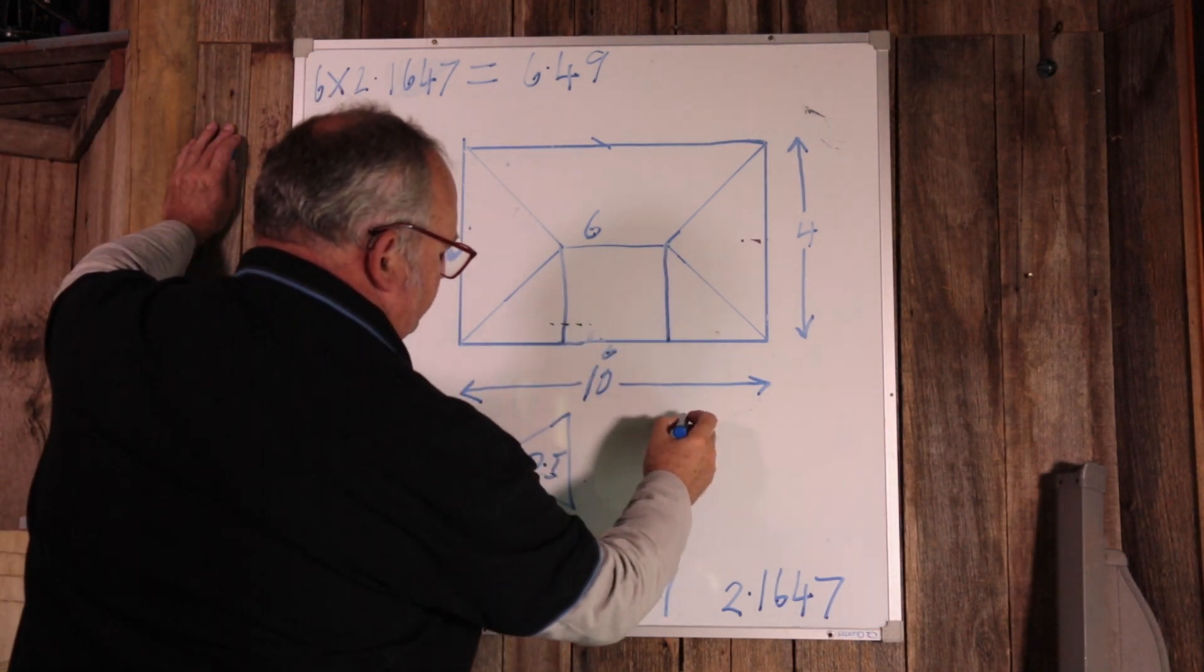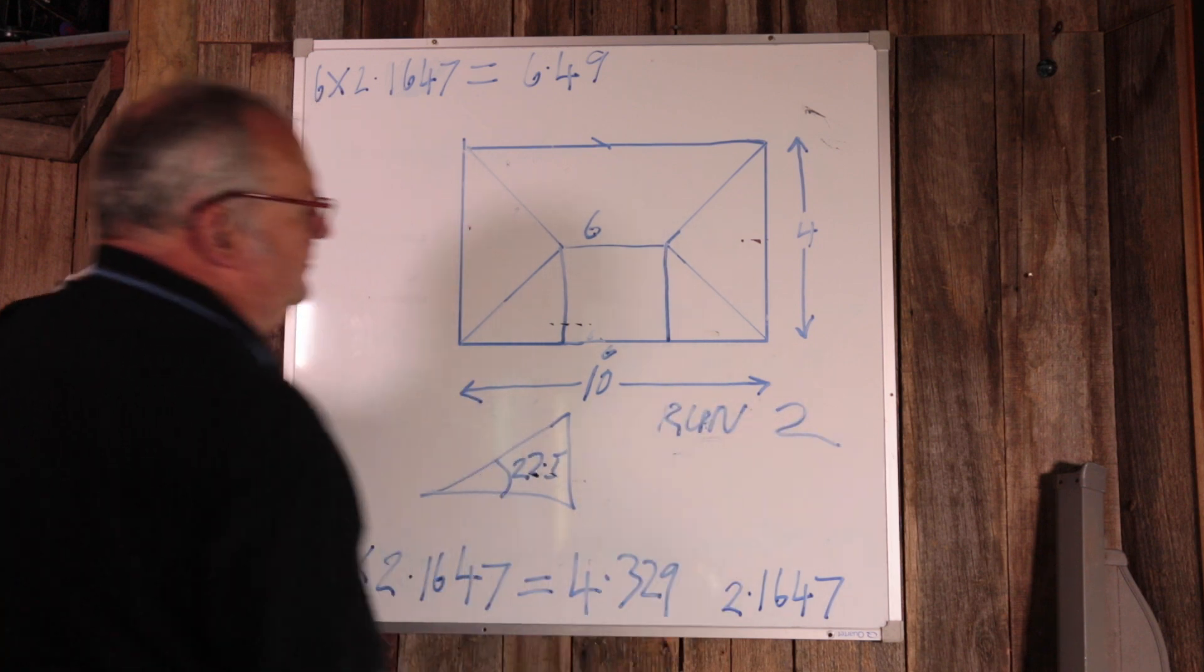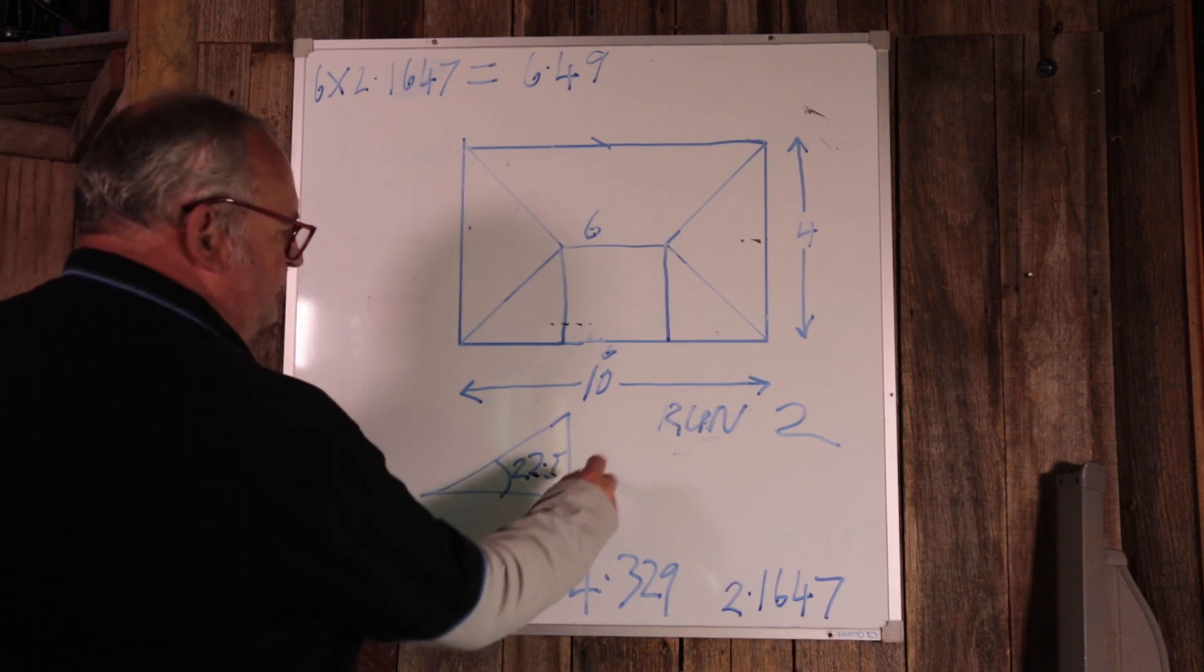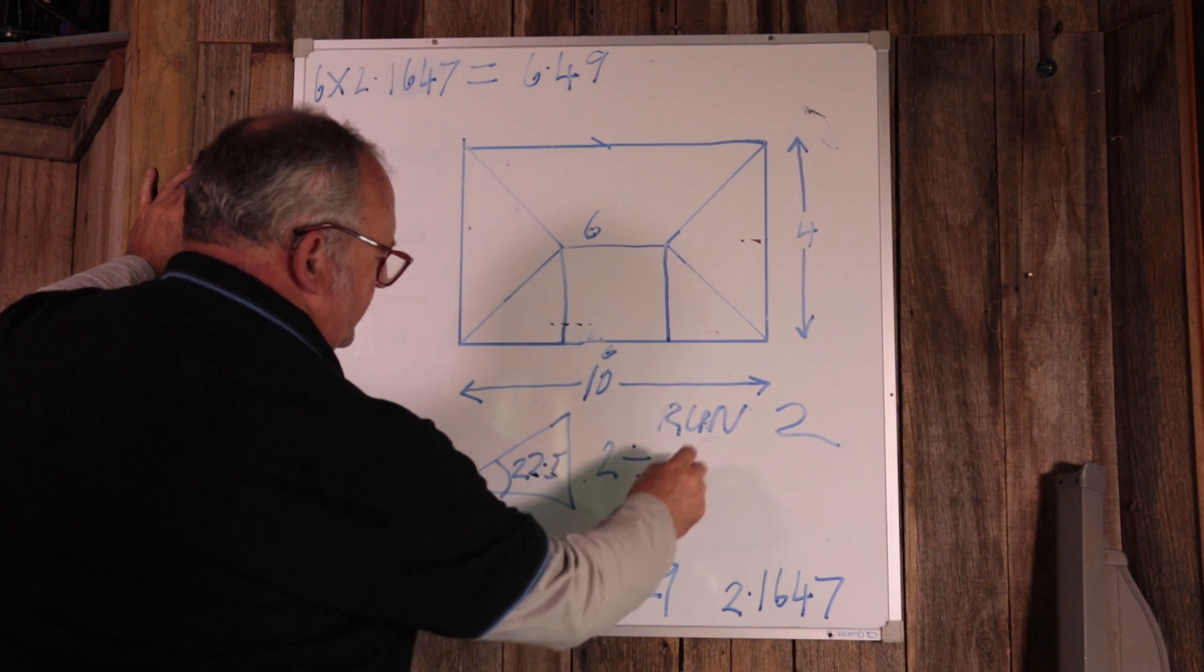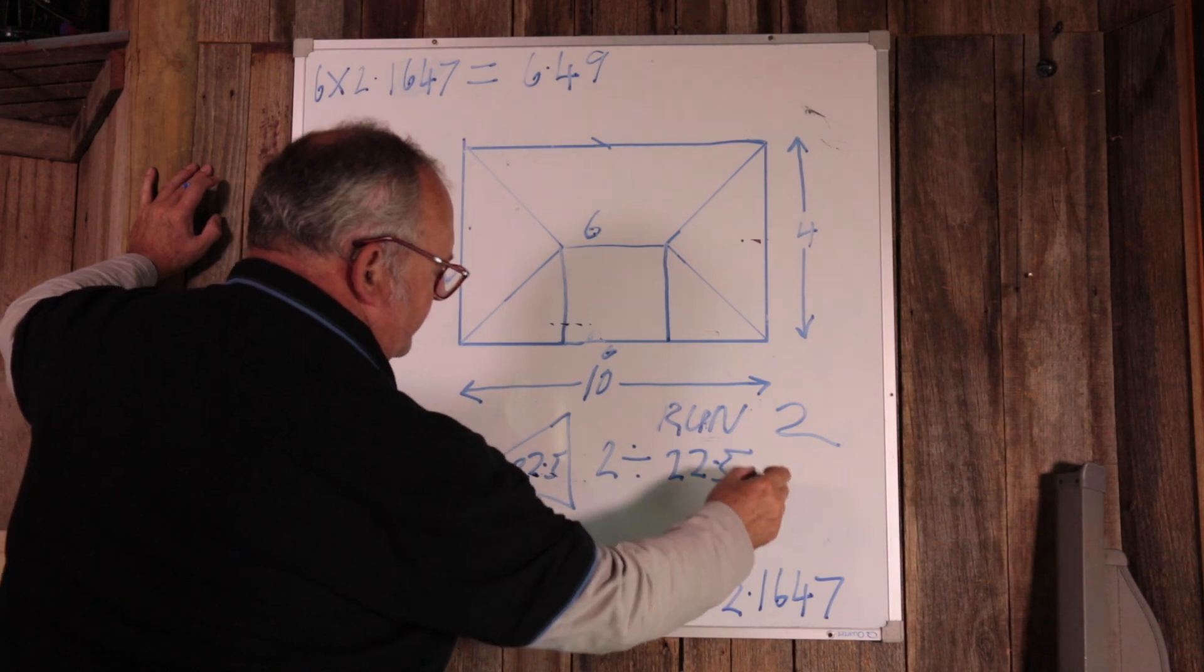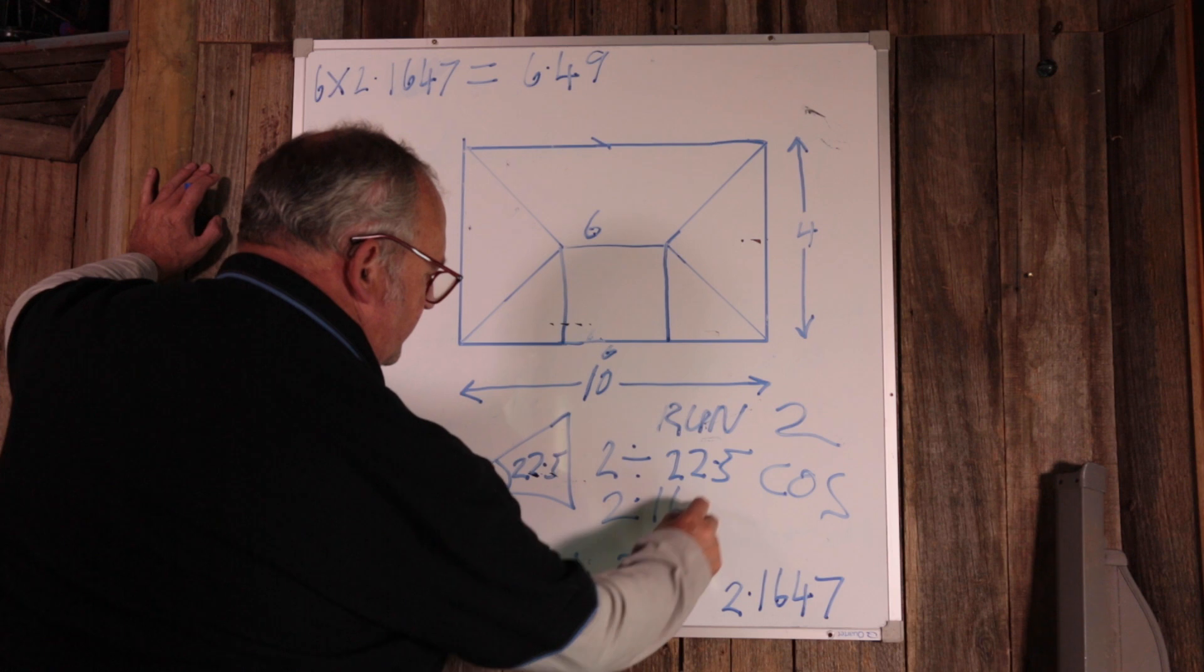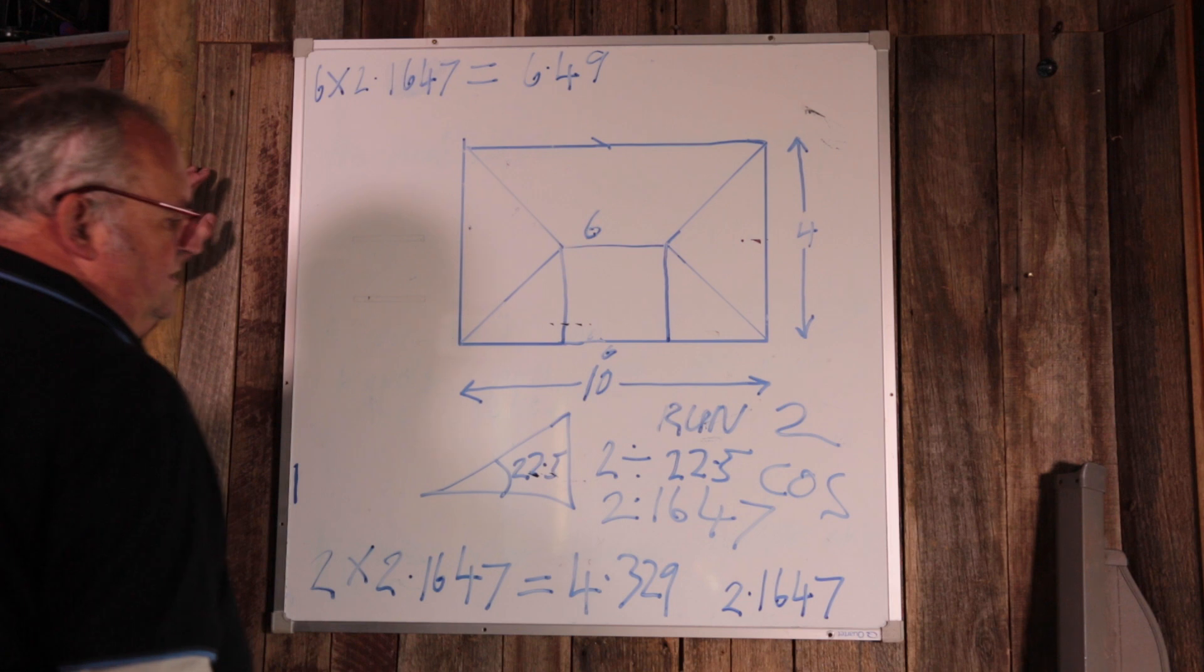So what we need to do is we find the run, so it's 2 meters on the flat from here to here. But we want what the length is on the slope, or rafter length. So we go 2 divided by cos 22.5, and that gives us 2.1647.